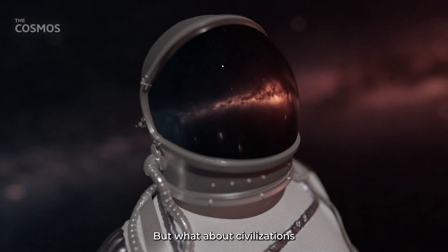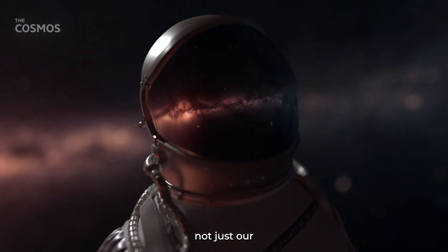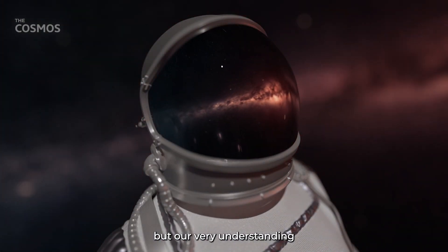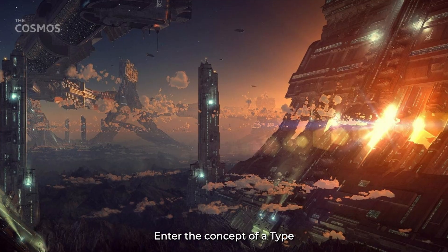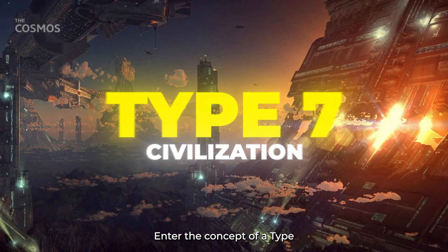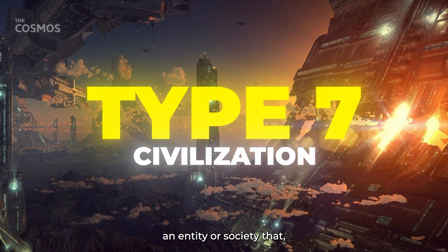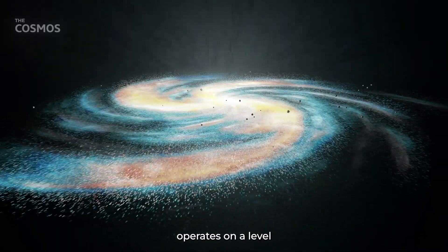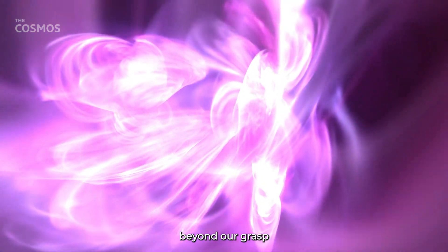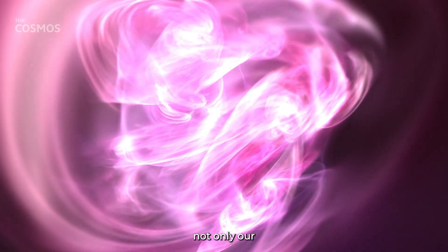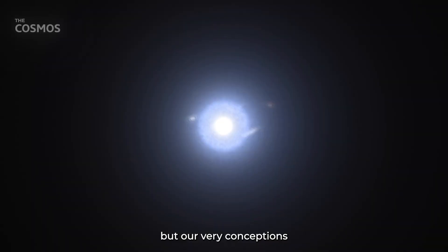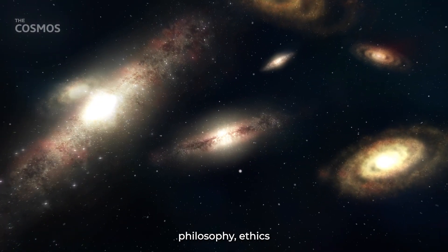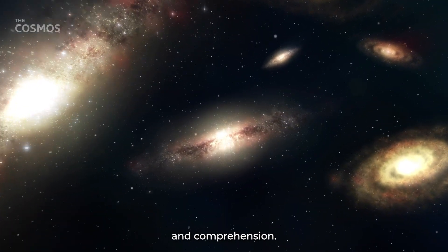But what about civilizations that transcend not just our own capabilities, but our very understanding of reality itself? Enter the concept of a Type 7 civilization, an entity or society that, if it exists, operates on a level so fundamentally beyond our grasp that it challenges not only our technological abilities, but our very conceptions of science, philosophy, ethics, and comprehension.